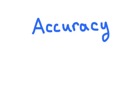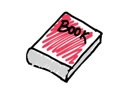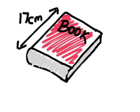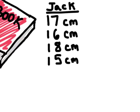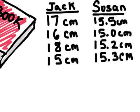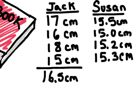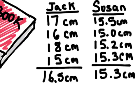Accuracy can be defined as how close a measurement is to the true value of the quantity being measured. Two students have the task of measuring a book whose actual length is 17 centimeters. Jack measured the book to be 17, 16, 18, and 15 centimeters, giving an average of 16.5 centimeters. Susan measured it to be 15.5, 15.0, 15.2, and 15.3 centimeters, giving an average of 15.3 centimeters. Jack was more accurate because his average was closest to the correct value.